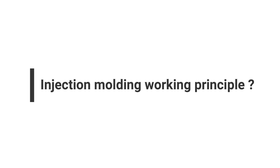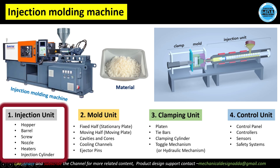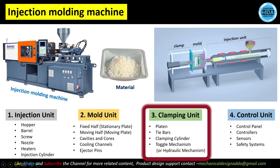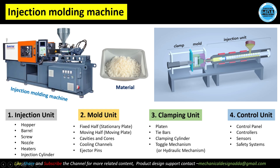The injection molding machine is divided into three main sections: the injection unit, the mold unit, and the clamping unit. There is also a control unit. The process starts with clamping, injection, cooling, and ejection of material. The control unit contains control panels and sensors so we can analyze data and control the complete machine.